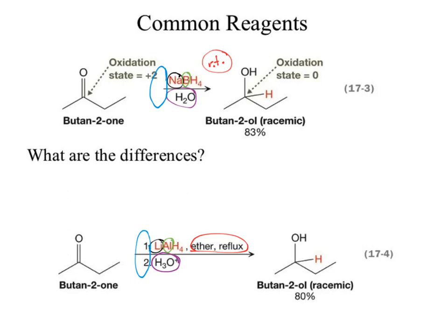Let's look at the overall reaction from beginning to end. What have we added to the pi bond? We added hydride and hydrogen. We added hydride to the carbonyl carbon — because the carbonyl carbon is partially positive and our hydride, being negative, associates with that. We're also adding H⁺, which is positive, and that connects to our negative oxygen. So we can find the positives and negatives and see those patterns.